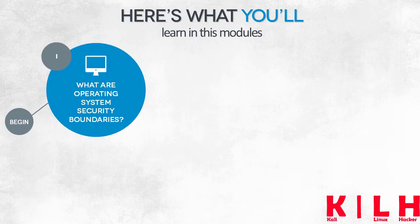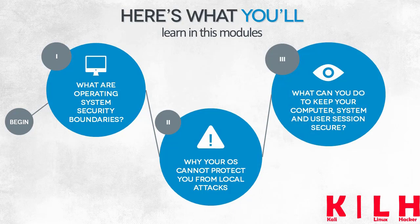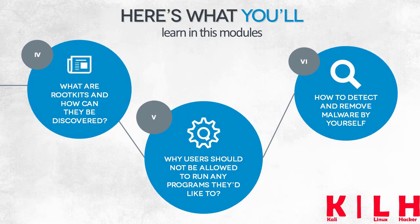The modules that deal with operating system security will talk above all about system security boundaries. The concept of a security boundary is vitally important, as safeguarding a system against cyber threats amounts to risk management. To manage risks in a conscious manner, you have to be aware of the protection offered by your computer system. You also need to take note of the fact that an operating system can only protect data when it's running — it doesn't protect data against local attacks. We'll also take a look at the concept of granting rights not to users, but to the programs launched by users.